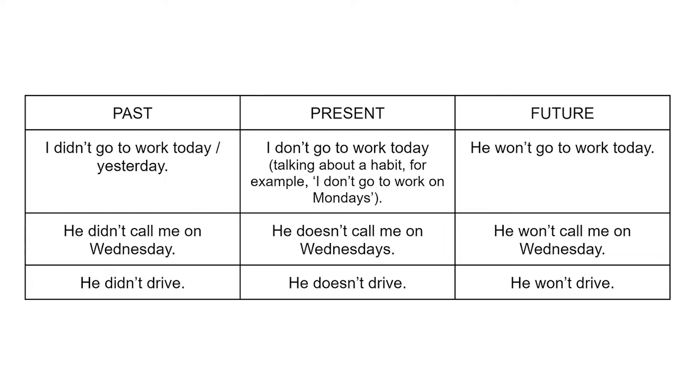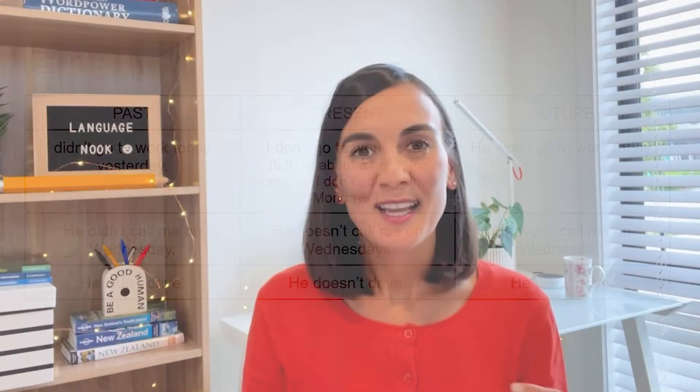That negative auxiliary has two jobs: it makes the sentence negative and it also tells us what tense the sentence is in. When you are in a conversation, of course, the context helps the listener realize what tense you're talking about — the present, the past, or the future. But here we are analyzing the sentences from a technical point of view. So let's have a look at the sentences again and some possibilities: 'I don't go to work today.' 'I didn't go to work yesterday.' 'I won't go to work today.' Or 'He didn't call me on Wednesday.' 'He doesn't call me on Wednesdays.' 'He won't call me on Wednesday.'